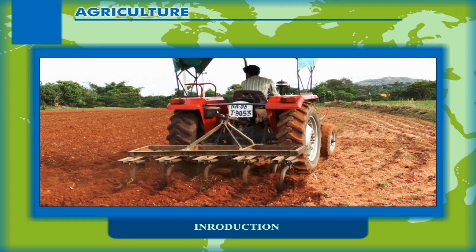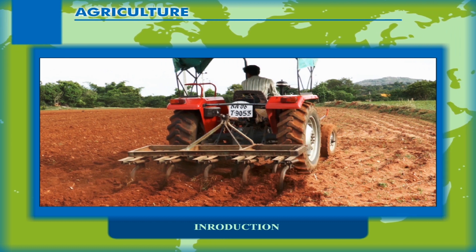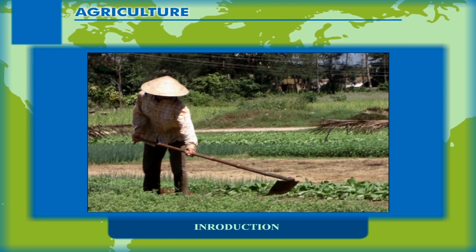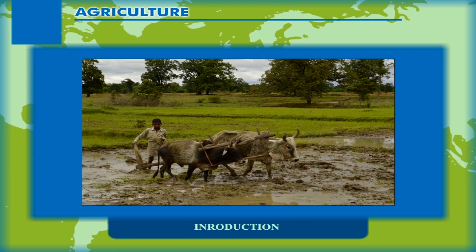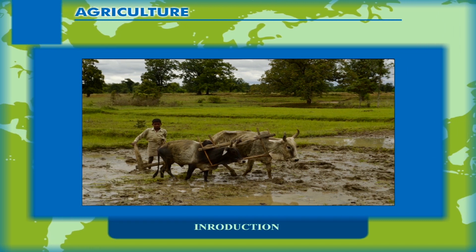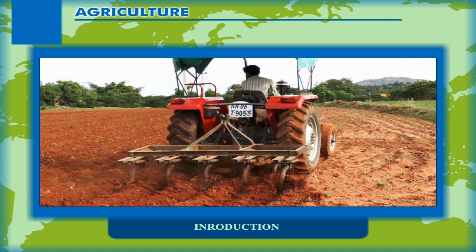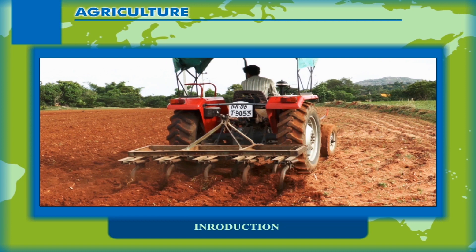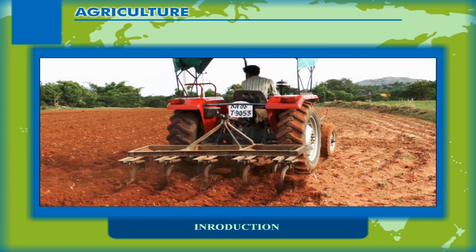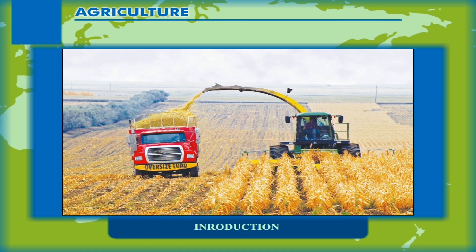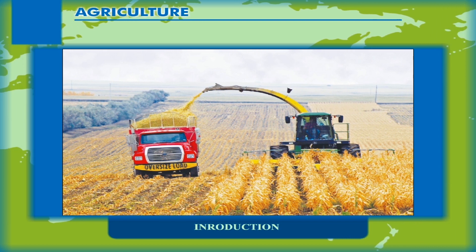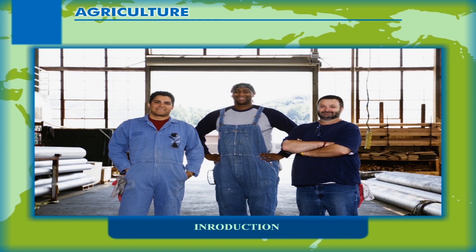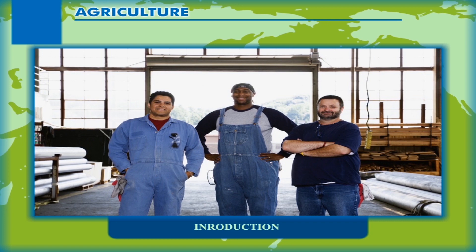Methods of cultivation have improved a lot since ancient times. The early farmers used only simple tools like hoes and sickles. Gradually, ox-drawn plows were introduced. In developed countries today, all farm operations have been mechanized. Tractors with multiple attachments perform different functions. This has reduced the number of people occupied in agricultural work, and large numbers of people in these countries are now engaged in other occupations like industries and services.